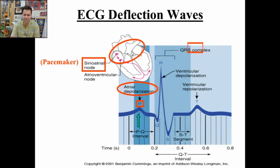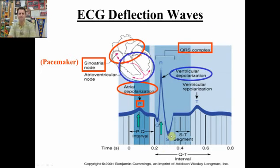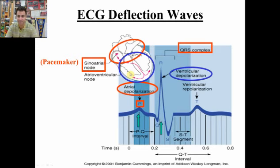Next, we have the QRS complex. The QRS complex, labeled QRS, is reflective of ventricular depolarization. As the wave spreads through the AV node and down through the Purkinje fibers and so on, we see the QRS complex.